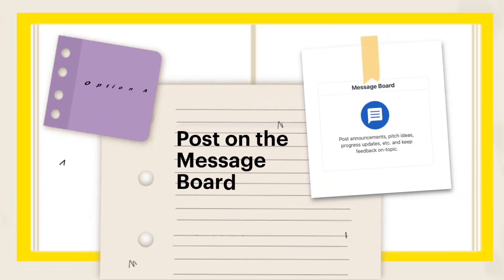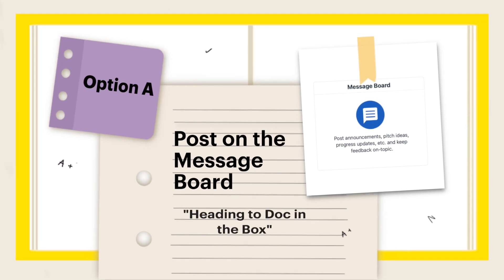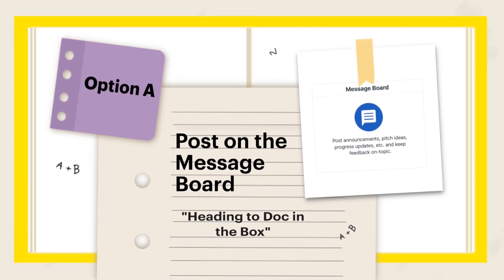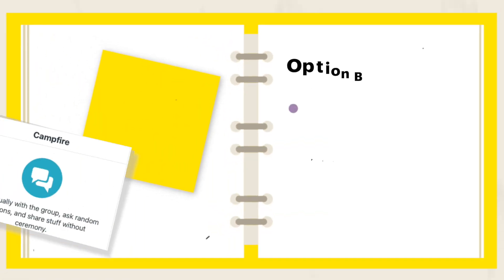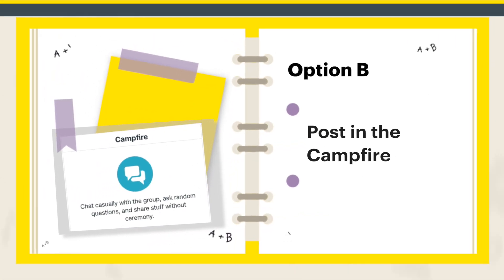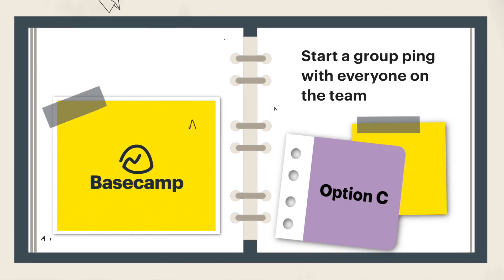Question one: I want to let my team know I'll be stepping away a little early to head to a doctor's appointment. There's nothing for them to do, but I just want to send a quick message to everyone in the group, just as an FYI. Should I A) post a message on the message board in our team's project titled 'Heading to Doc in the Box'? B) post in the campfire for our department's shared project? Or C) start a group ping with everyone on the team? The answer is B — post it in the campfire. This sort of quick communication doesn't need a permanent message board post, and if everyone on the team is already part of a team project, you don't need to start a separate ping with all the same people.